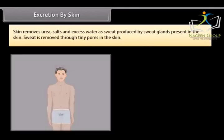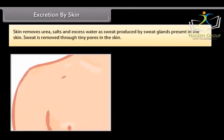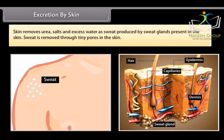Excretion by skin: Skin removes urea, salts, and excess water as sweat produced by sweat glands present in the skin. Sweat is removed through tiny pores in the skin.